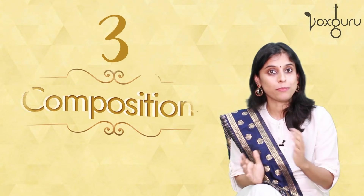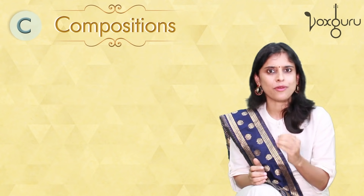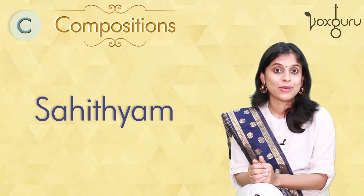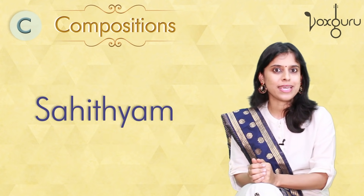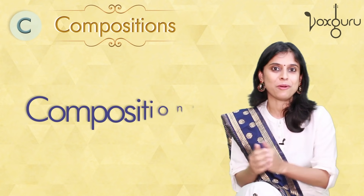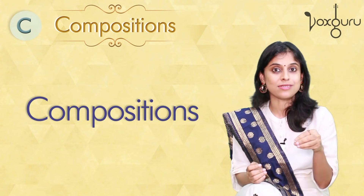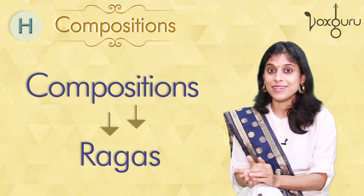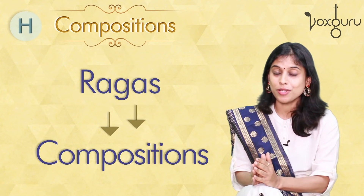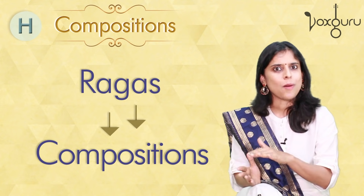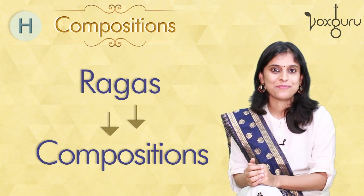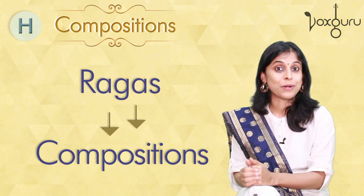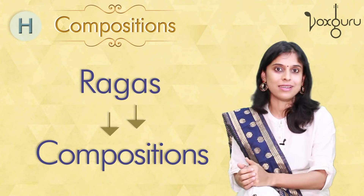The third difference lies in the compositions. Carnatic music gives a lot of emphasis to compositions, especially the lyrics or the Sahityam. If you want to learn Carnatic music, you should be ready to develop a big repertoire of many compositions, and it is through these compositions that you will get a deeper insight into the ragas. Whereas in Hindustani classical, it is the opposite — here we give more importance to exploring the raga, and compositions are like a framework to achieve this. So if you want to learn Hindustani classical music, you should be ready to start your creative journey at a very early stage.